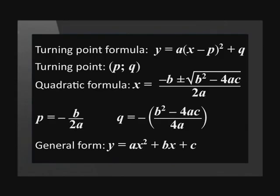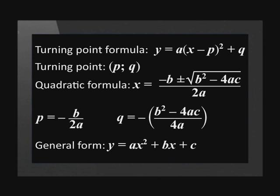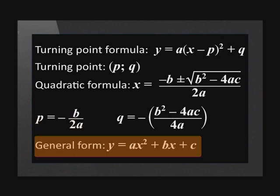Let's take a look at all the information. The turning point is the point pq. From the quadratic formula we can calculate p by calculating negative b divided by 2 times a. We get a, b, and c from the general form of the quadratic function, so we just need to use those values to calculate what we need.